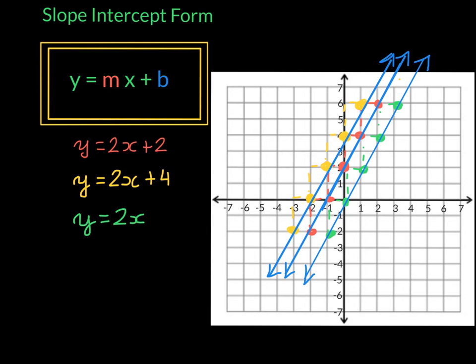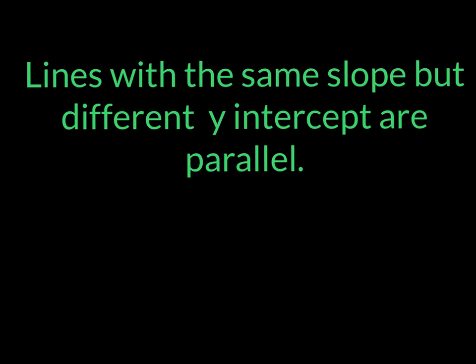You can notice something when we have the same slope in several lines, but different y-intercepts. That's because lines with the same slope, but different y-intercept, are parallel.